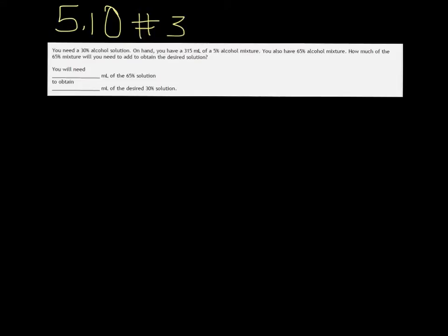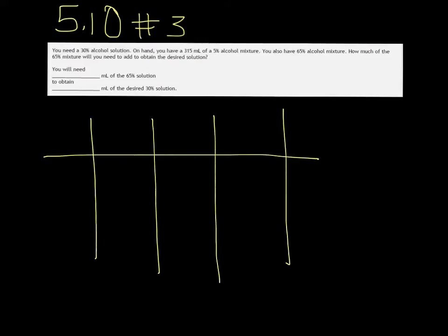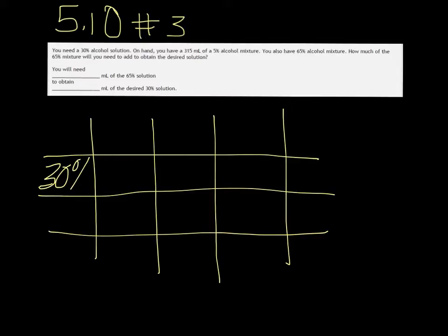So I like to organize these in a table. You'll need 4 columns and 3 rows. Our rows will be the, I put that in the wrong spot, let me erase. We do want the 30%, but not there. We're going to put the 5% and the 65%, the two things that we're mixing. And the desired outcome is the 30%.